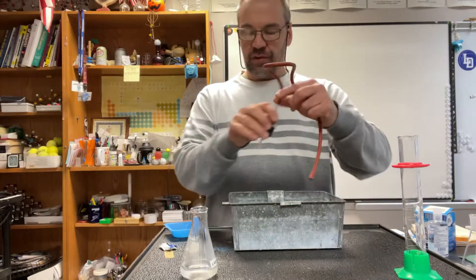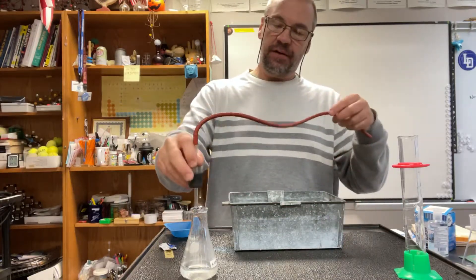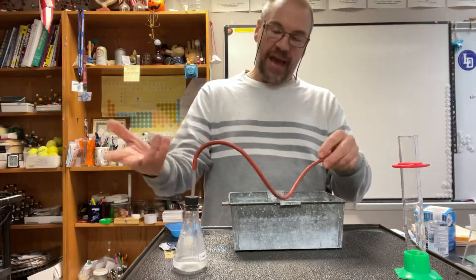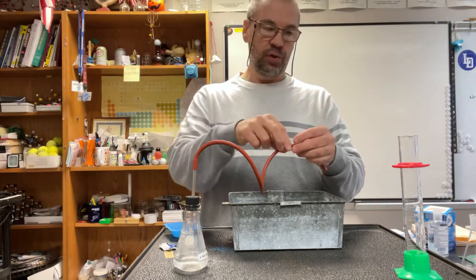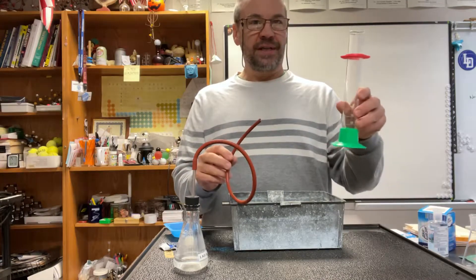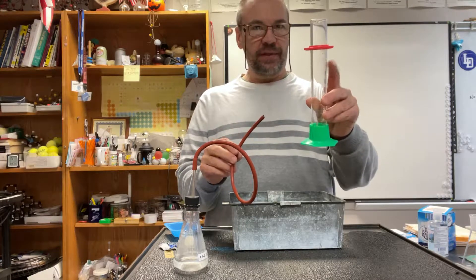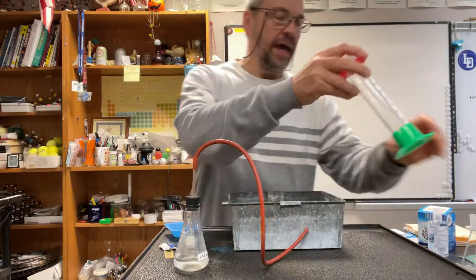So what happens is as soon as you put that Alka-Seltzer in there, you put the cap on, so any gas that's produced is going to go up this tube, and then what you want to do is collect it in your graduated cylinder.